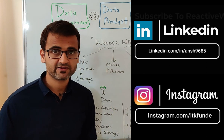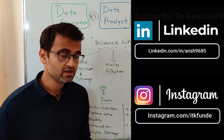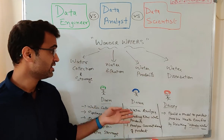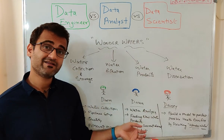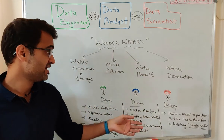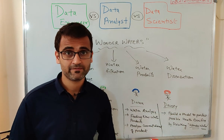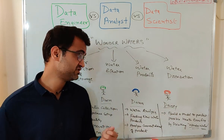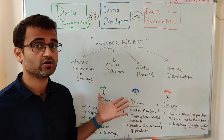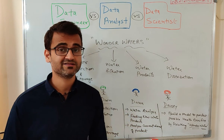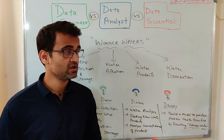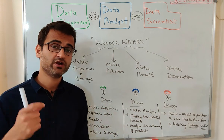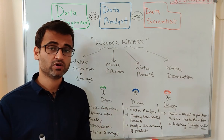So it's very self-explanatory: Dane is our data engineer, Dana is our data analyst, and Daisy is our data scientist. This is pretty much what these three different roles do in any data project. Now let's pinpoint the exact work each of these roles does in the IT industry.